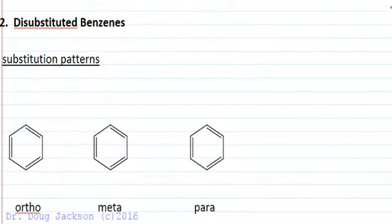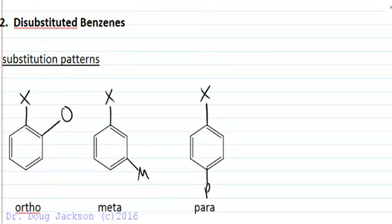For disubstituted benzenes, we have substitution patterns of ortho, meta, and para. So ortho looks like this. If we have one group here, ortho to that group would be at this position or ortho could be at the other position here. So the same positions are both symmetrical for ortho substitution. Two groups side by side on the benzene because it's planar. Meta would then refer to 1, 2, 3 away. So there's the meta position. And then para is directly opposite the benzene ring, the benzene substituents in the 4 position relative to the original group.